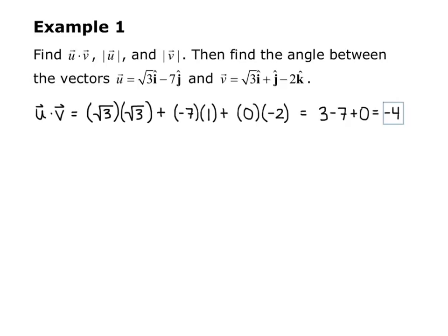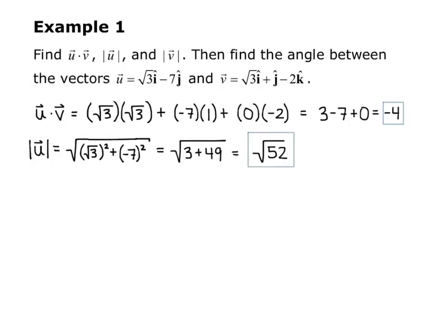Now I want the magnitude of vector u, and I know that's the square root of each component squared, so the square root of square root of 3 squared, plus negative 7 squared. So that gives me the square root of 3 plus 49, which simplifies to the square root of 52.